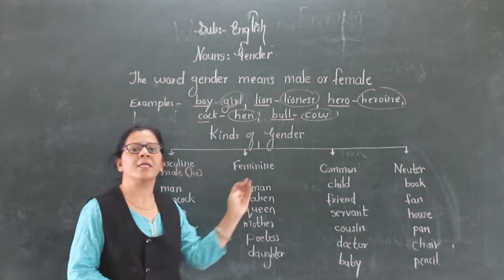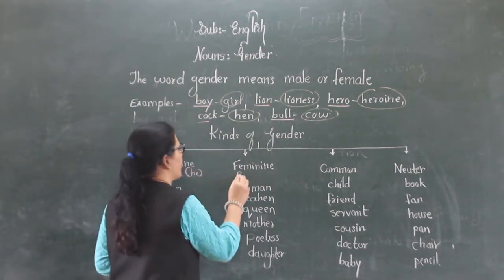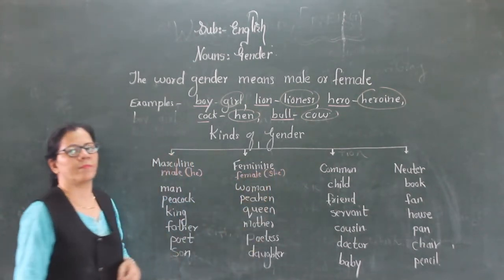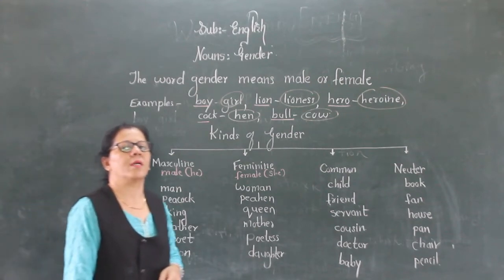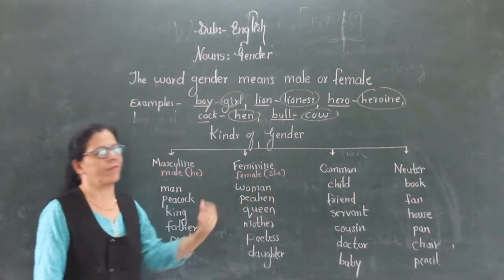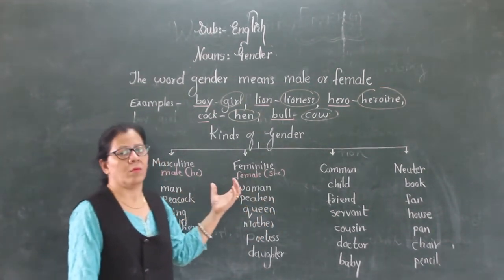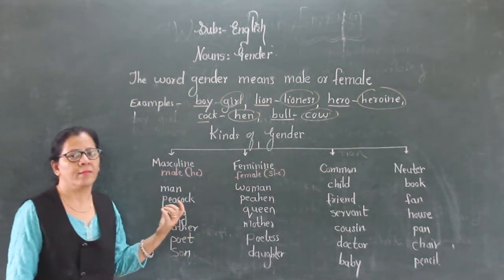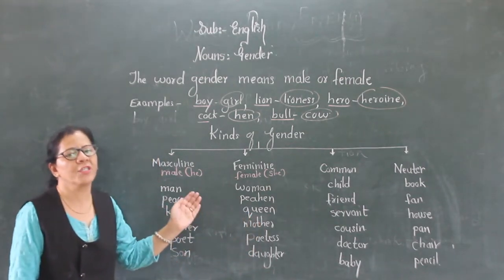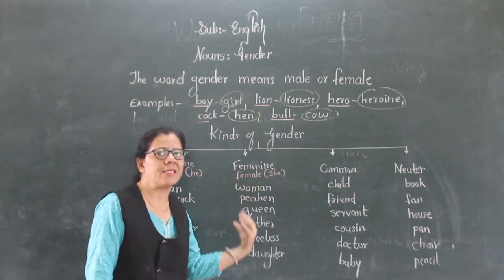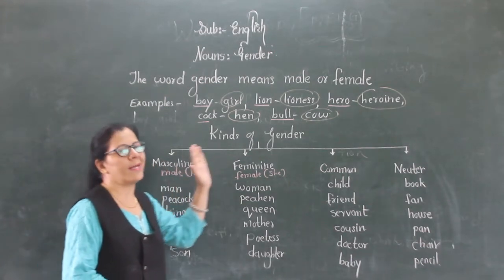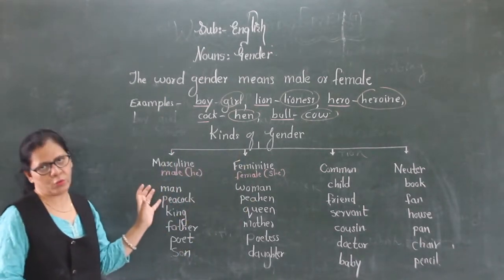And opposite of masculine is feminine. Feminine means female — that is 'she' words. So the noun which represents female, those are called as feminine. A noun which represents or which denotes a female is said to be in feminine gender. So masculine and feminine are both opposite to each other.